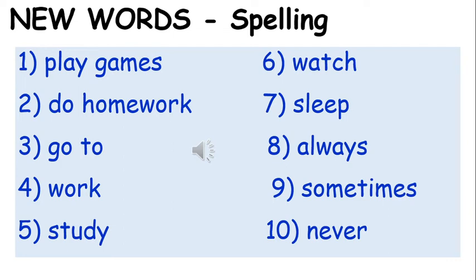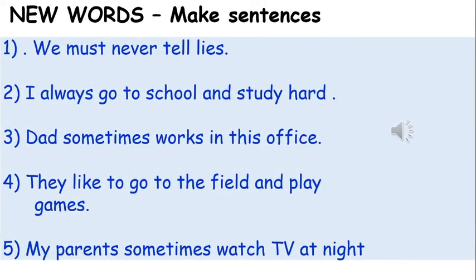Now these words you have to learn for spelling. I'm going to pair you two by two and together with your partner I'm going to give you some words to make sentences with. Look at the screen — these are some sentences you made. Very good, well done! For example, number three: Dad sometimes works in this office. Number four: They like to go to the field and play games. Simple and nice sentences — well done!